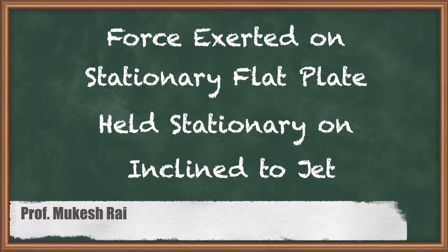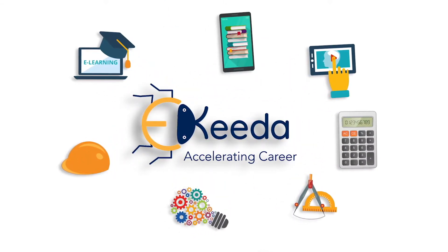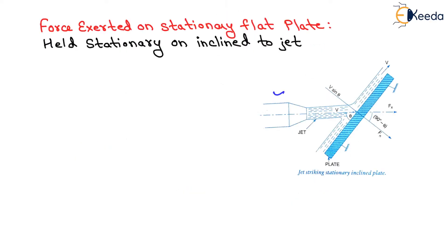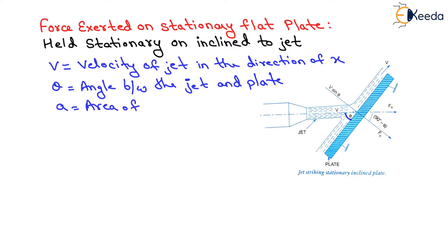Hello students, today we are going to study the force exerted on a stationary flat plate when the plate is held inclined to the jet. In this diagram, let a jet of water coming out from the nozzle strike an inclined flat plate as shown. Let V be the velocity of the jet in the direction of x, theta be the angle between the jet and the plate, and A be the area of cross-section of the jet.